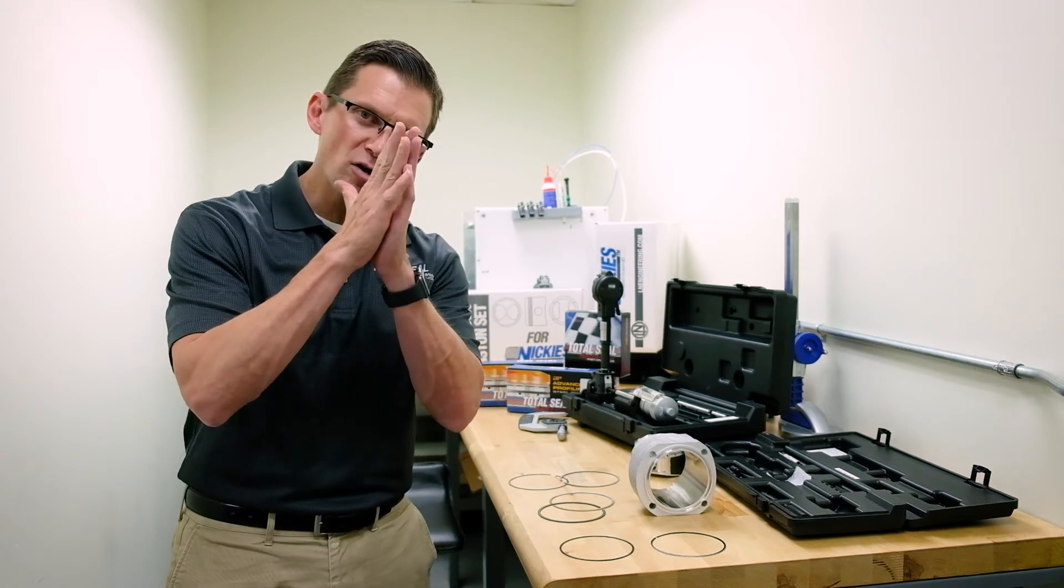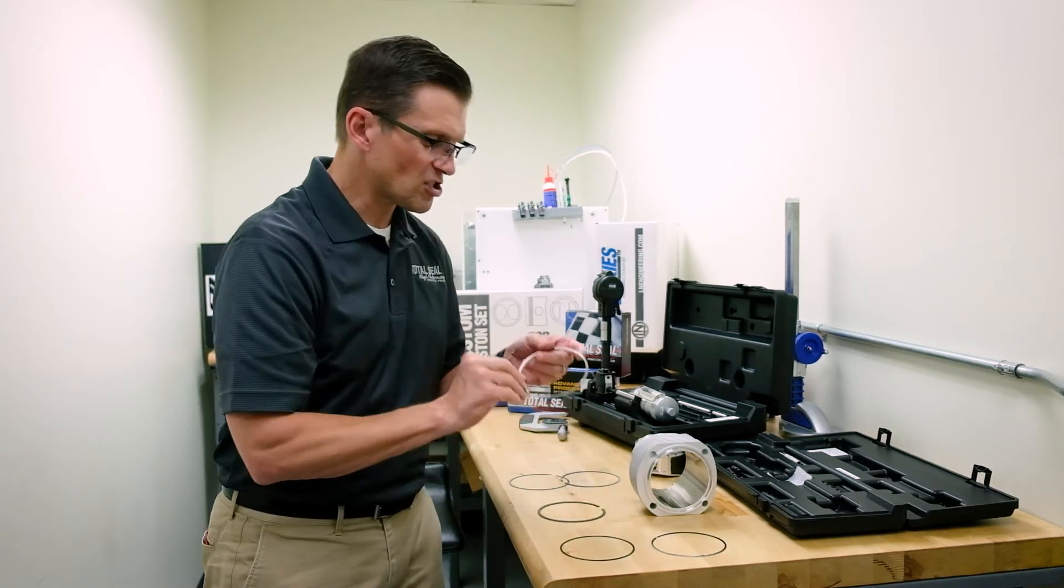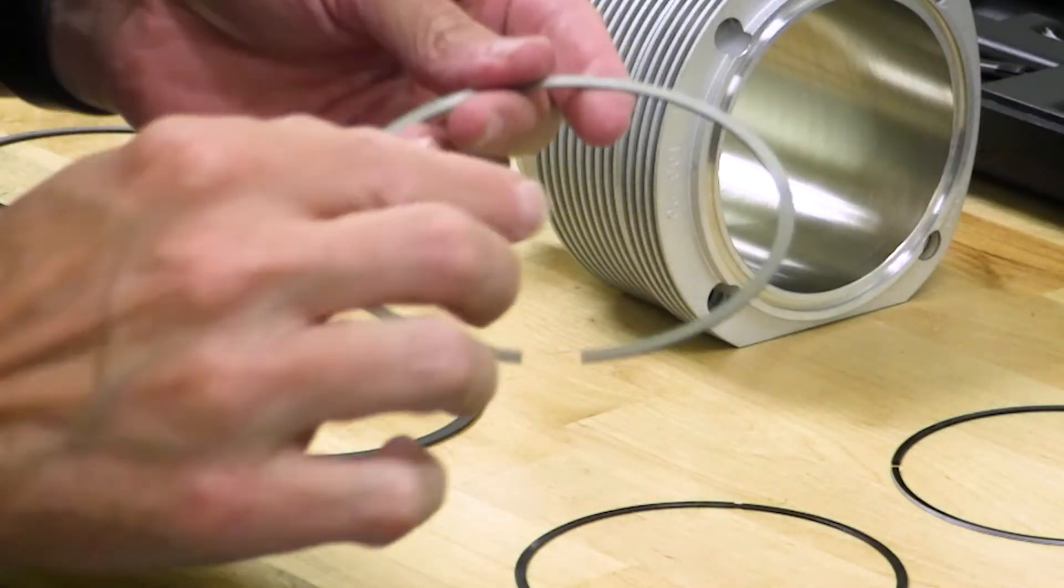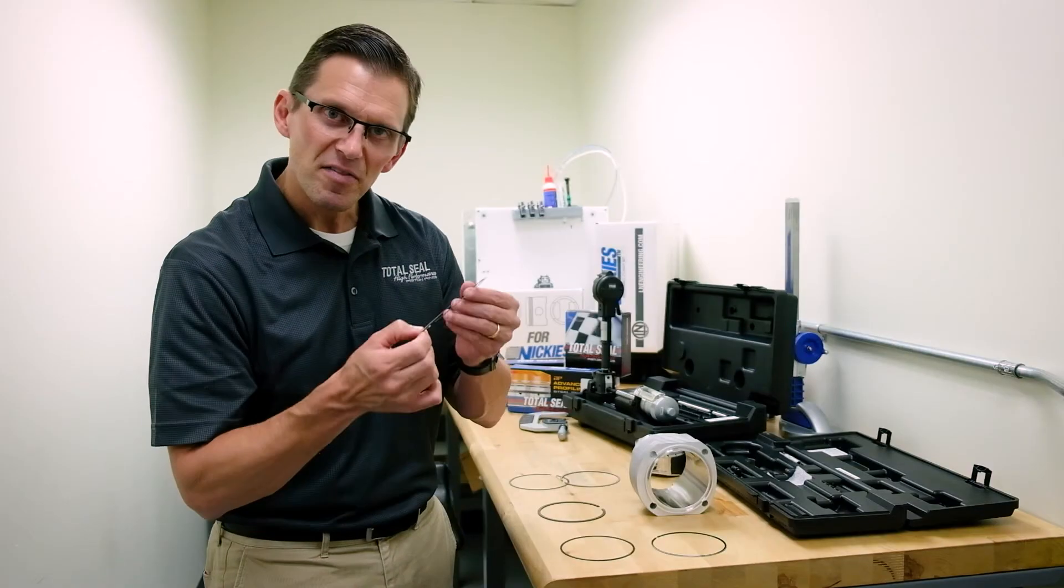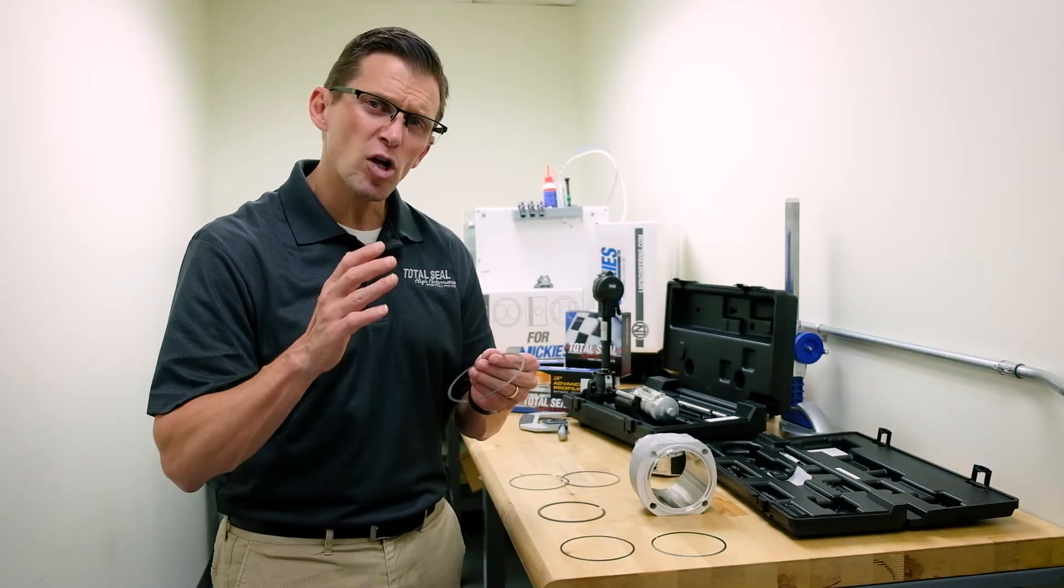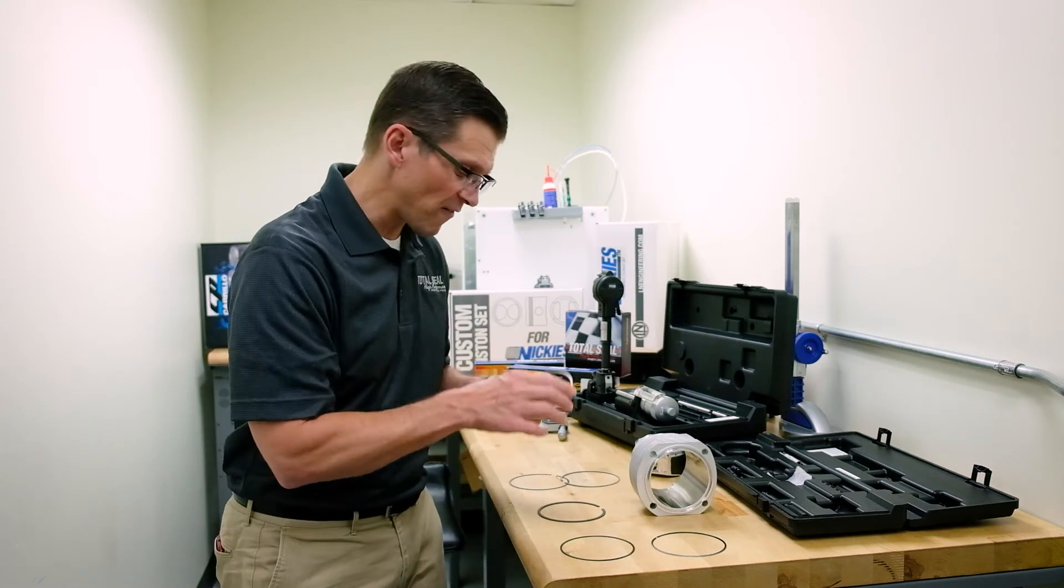The smoother those surfaces can be, the better they'll seal. For example, here's a steel top ring and you can even see the grinding marks in that top ring. These rings tend to have an RA of somewhere between 5 and 10 RA, which is called roughness average.